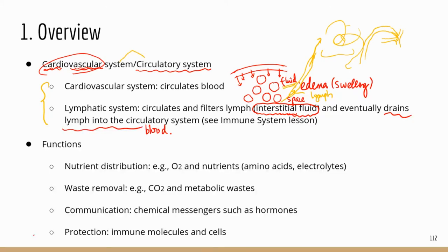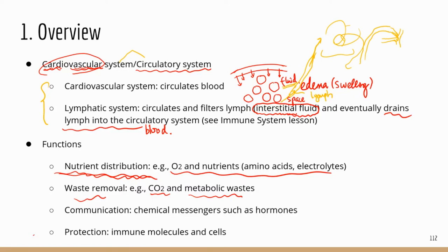There are four main functions of the circulatory system. First is nutrient distribution — blood brings in oxygen, nutrients, amino acids, electrolytes, and glucose to the tissues and cells of your body. At the same time it picks up metabolic waste from the cells, for example carbon dioxide and other metabolic waste such as urea (from protein metabolism) and uric acid (from nucleic acid metabolism like DNA and RNA).